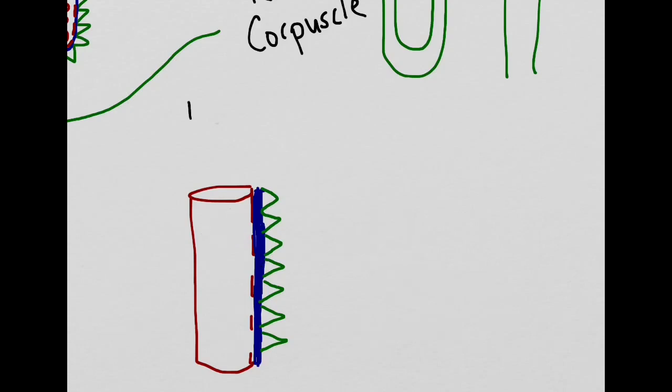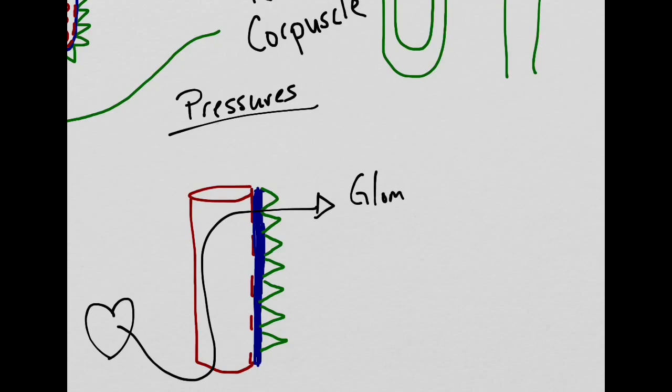At this point, let's talk about the pressures found in this area. The main pressure that was found here comes from the heart. The heart will pump 25% of the cardiac output into the kidneys, and this will cause a glomerular hydrostatic pressure. That glomerular hydrostatic pressure is typically around 50 millimeters of mercury.